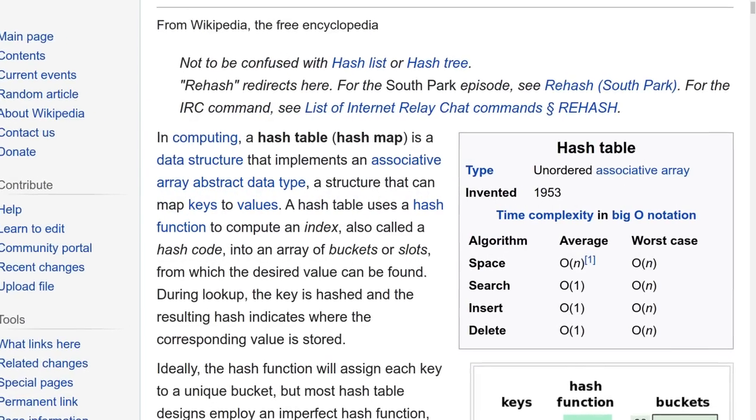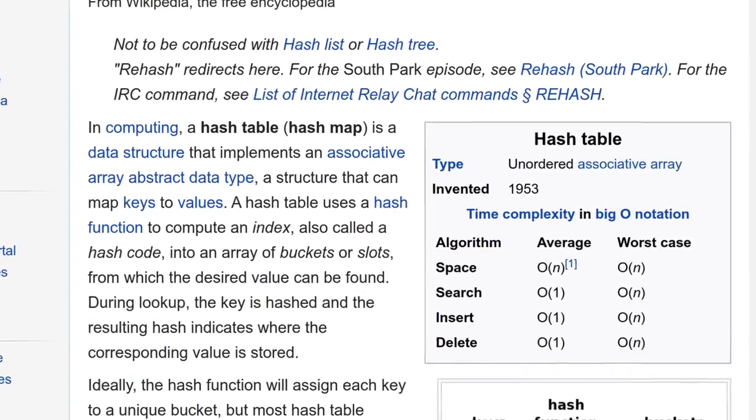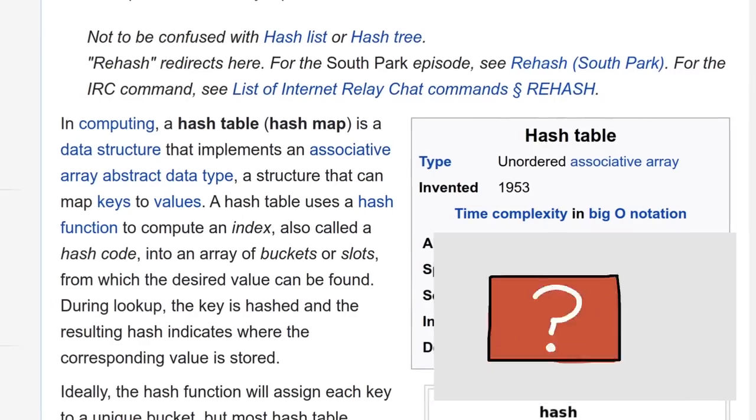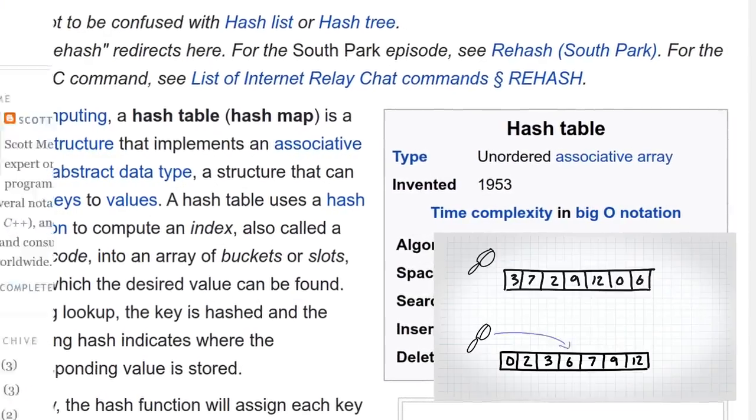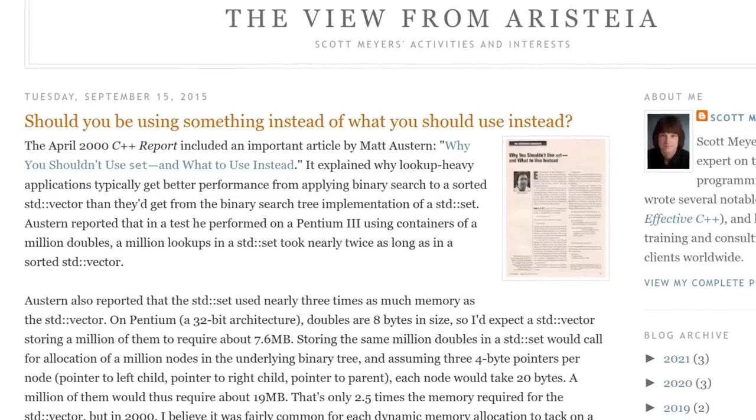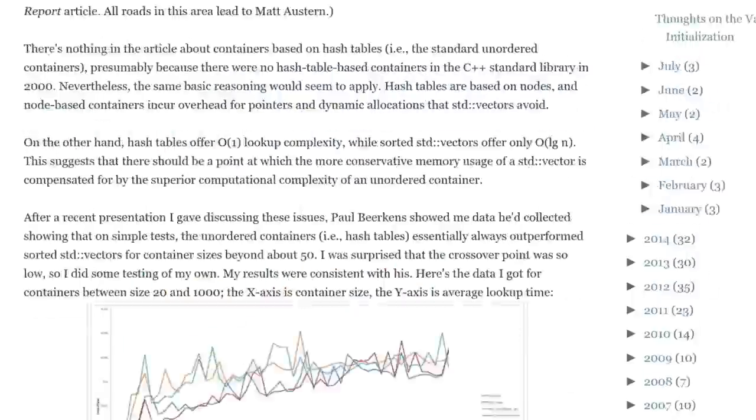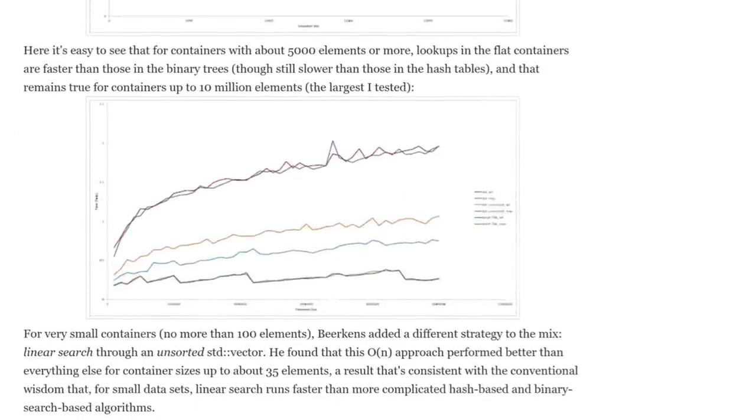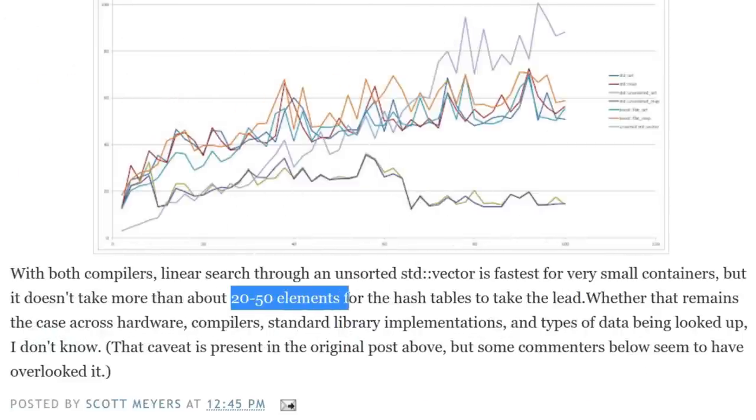So, the disadvantages now. First off, hash tables are fast. All of the operations are order one. But if you recall from the video on big O notation, the big O running time of an algorithm isn't everything. For example, on this blog post by Scott Meyers, the author of Effective C++, should you be using something instead of what you should use instead? Scott gives some great examples of just straight-up linear searches on arrays beating hash table lookups for small numbers of entries.